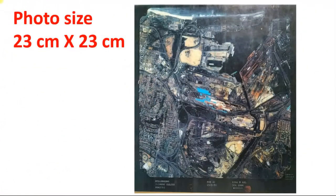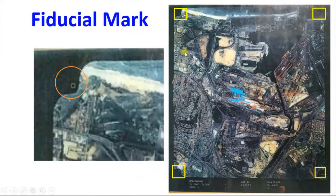The photo size of most aerial photographs is 23 cm by 23 cm — these are square photographs. Next, fiducial marks: every photograph has a minimum of four to a maximum of eight fiducial marks, and fiducial marks are mostly on the corners or on the sides of the photograph.